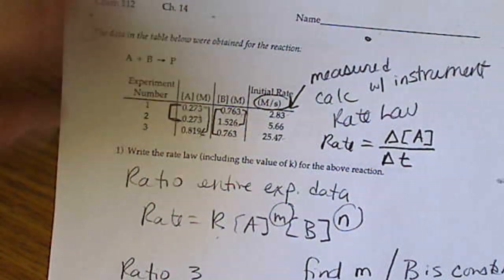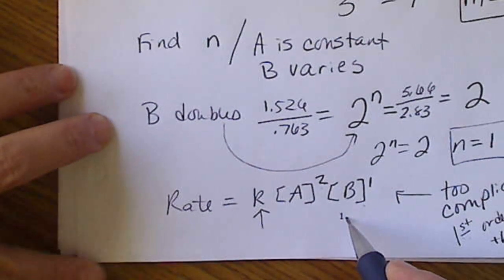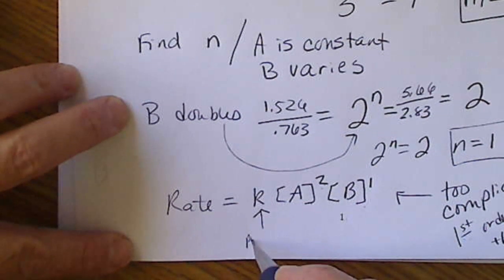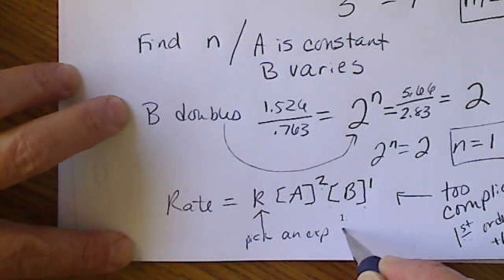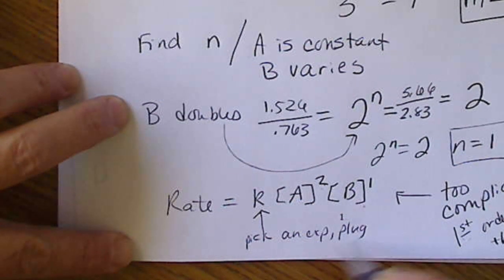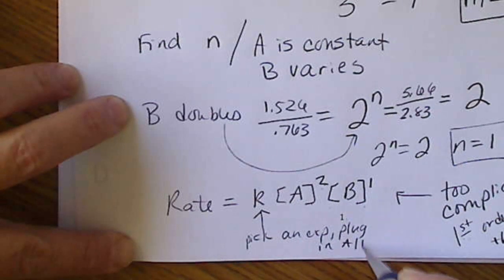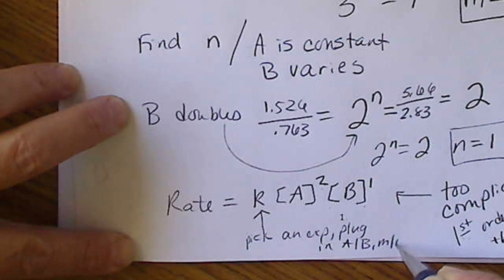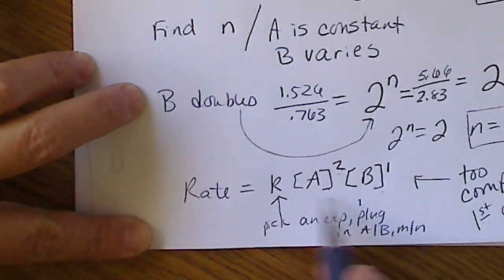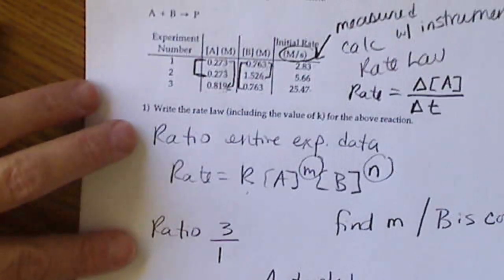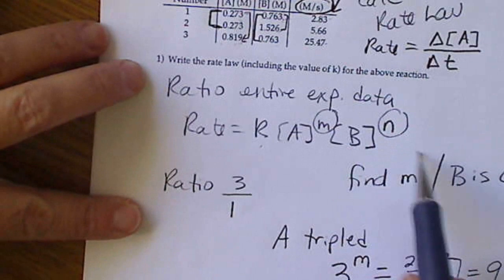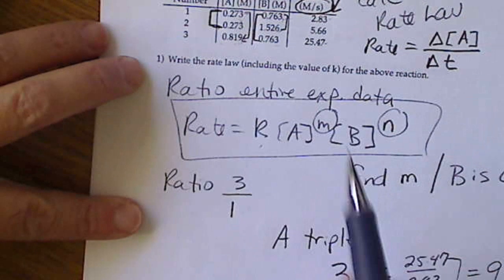If we can collect data like this, we can always find a rate law. Now we're going to pick an experiment, plug in the data — plug in A and B, M and N — and solve for the value K. Once we do that, we will rewrite the rate law with M equal to 2, N equal to 1, and solve for K.